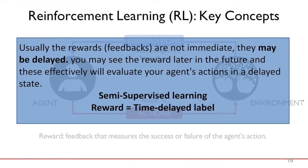Sometimes it happens that rewards are not coming immediately. For example, in the chess game, the agent is playing with a machine or another component. At each step, we don't give feedback to the agent. The reward will come at the end of the game, so we will have very sparse reward at the end of the game.